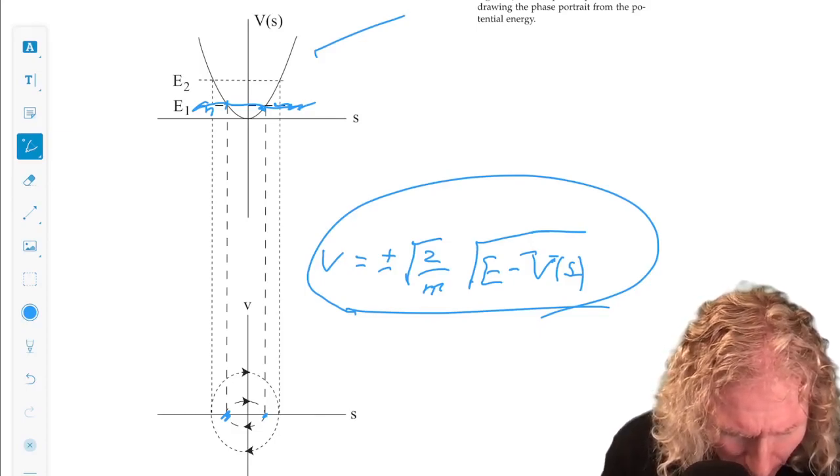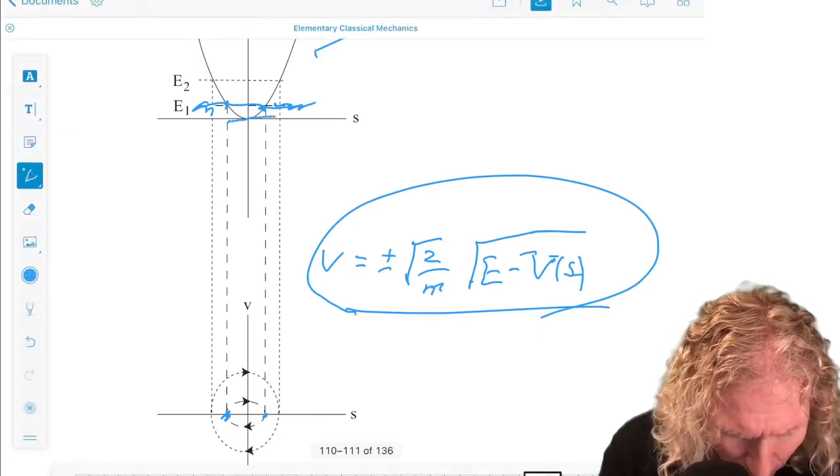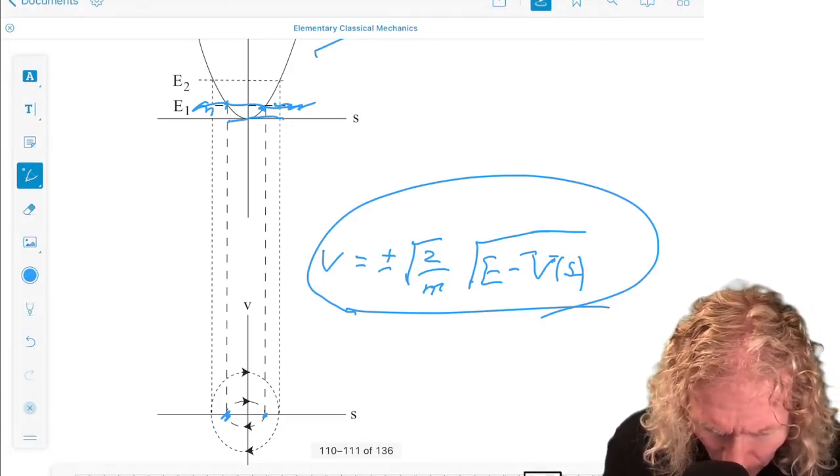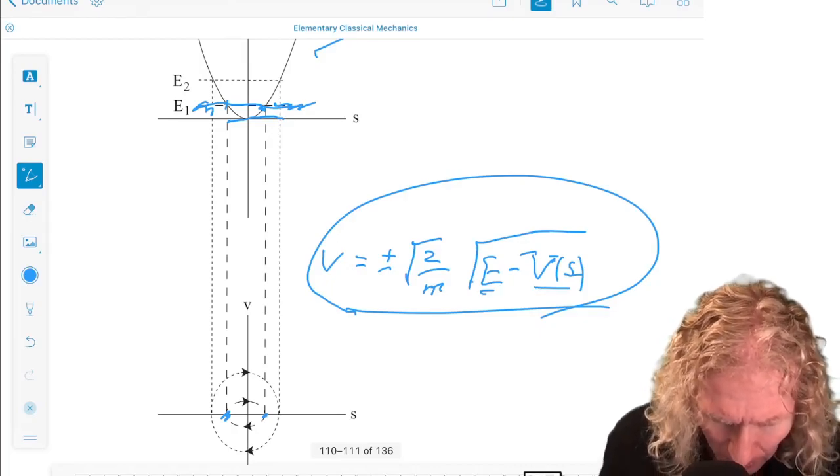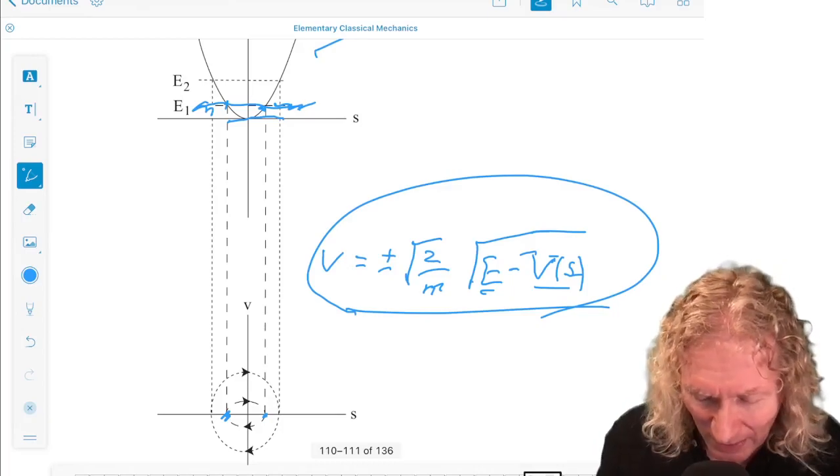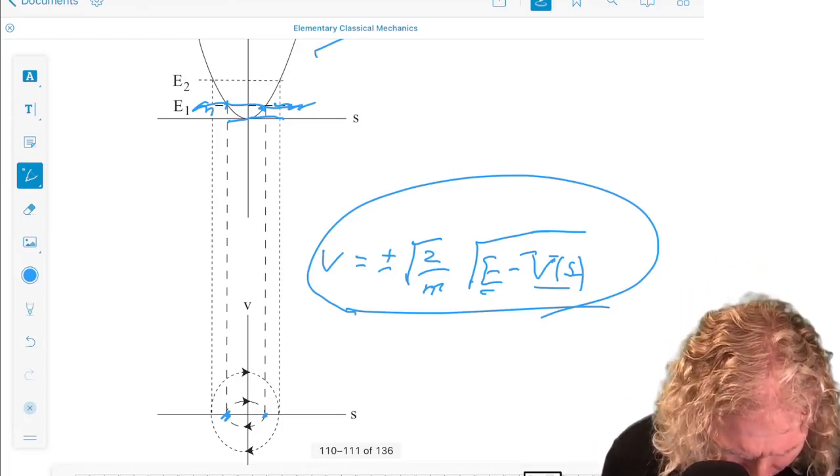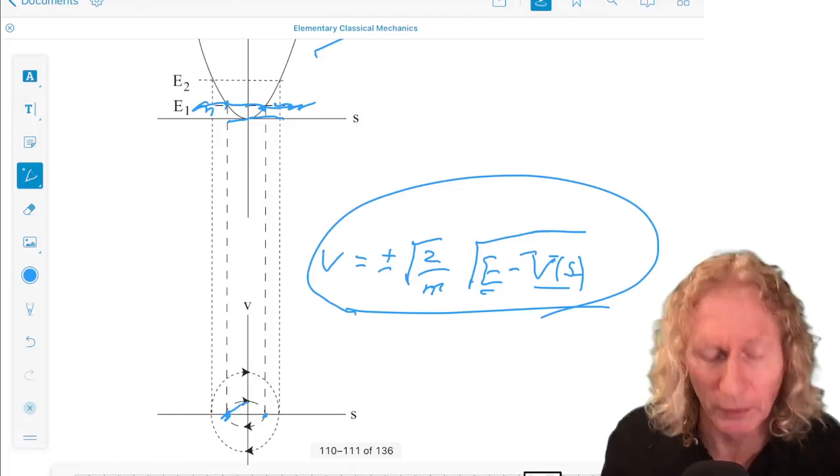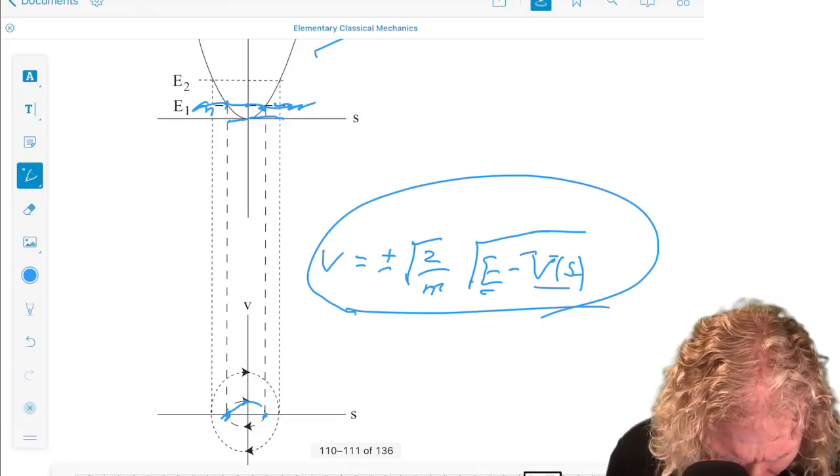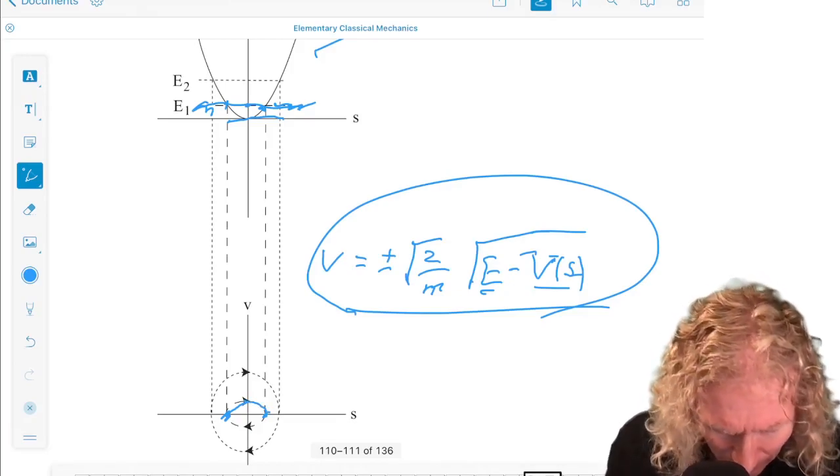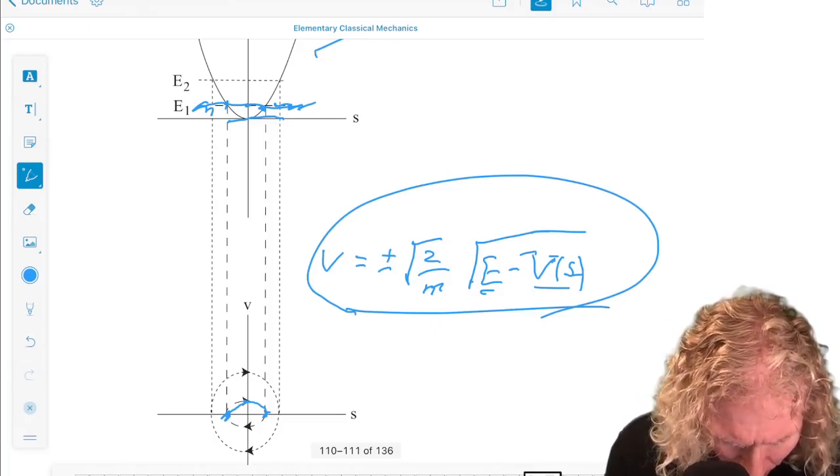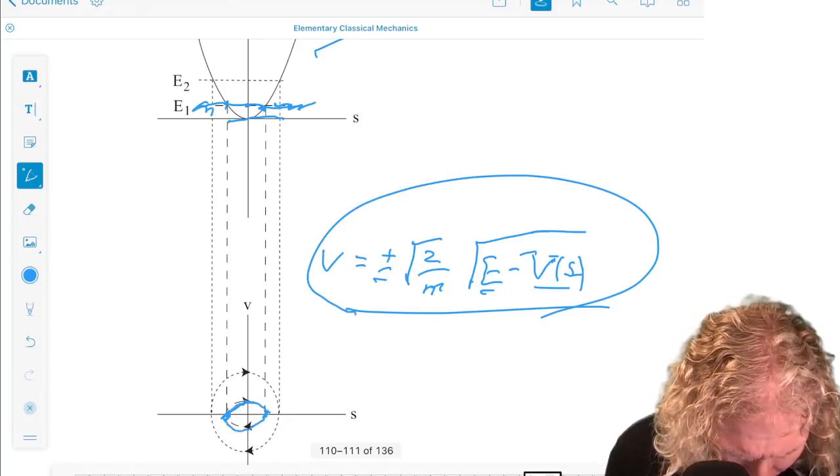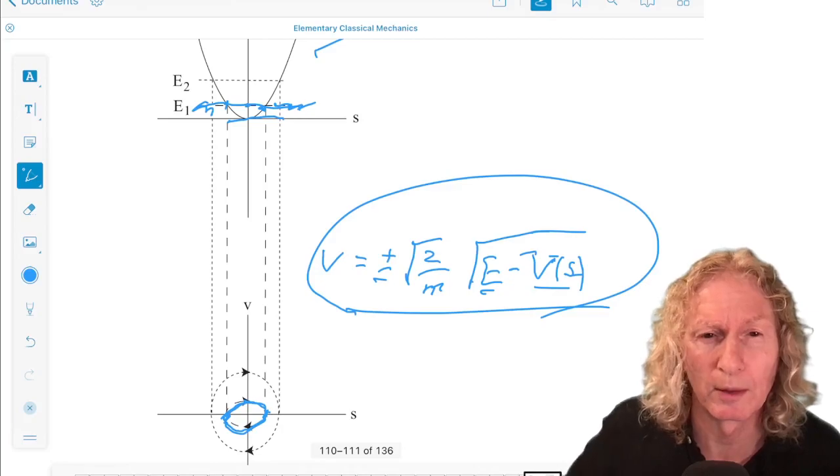Now, as I move in s from left to right, what happens? As I move across, v decreases, E is constant. As v decreases, sorry, V of uppercase V, the potential decreases, the velocity increases until it gets to this point here where it's decreased the most it can. Then it starts increasing again. Sorry, decreasing again until it gets to zero. And then if I take the negative branch, that just gives me this closed trajectory symmetric about the origin.